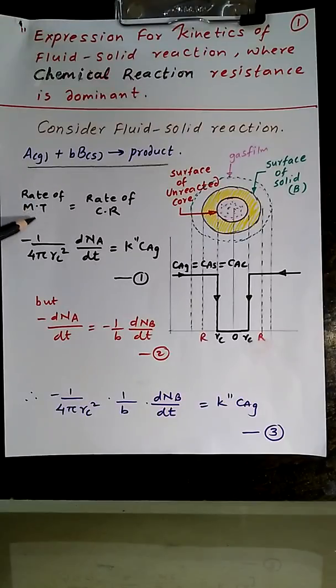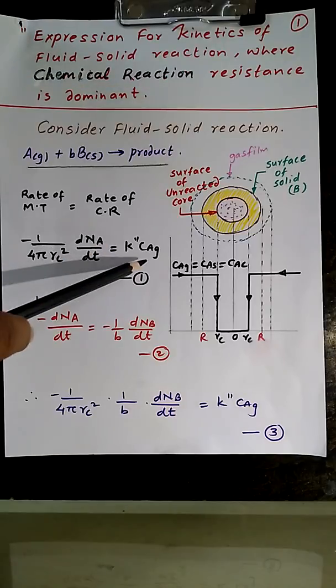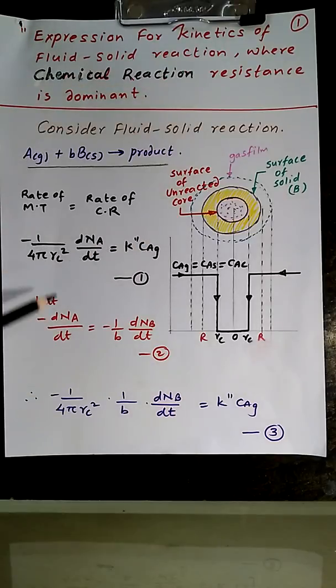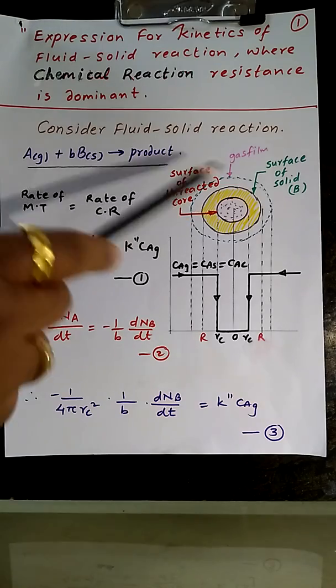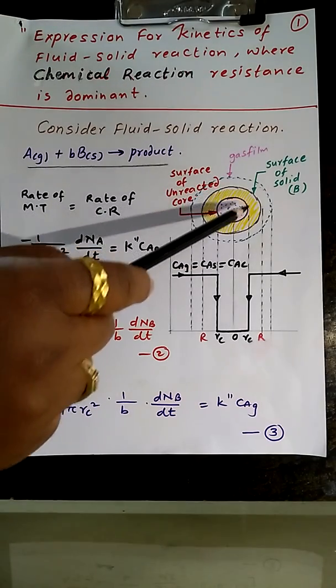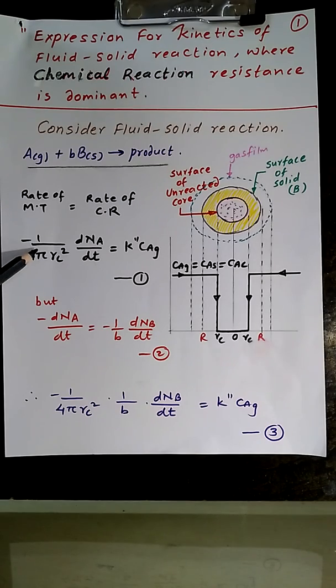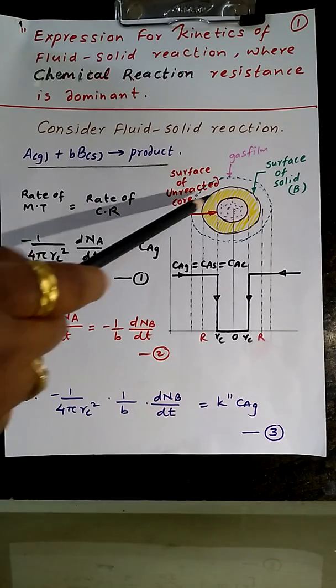So rate of mass transfer will be equal to rate of chemical reaction. So it will be minus 1 upon 4πRc² dNA/dt which will be k'' CAG, where k'' is the rate constant and reaction will depend upon the concentration of A in gaseous phase CAG. Now here we are considering the surface of that unreacted core. That is why rate will be in terms of 4πRc², on the basis of the exposed surface of the unreacted core.